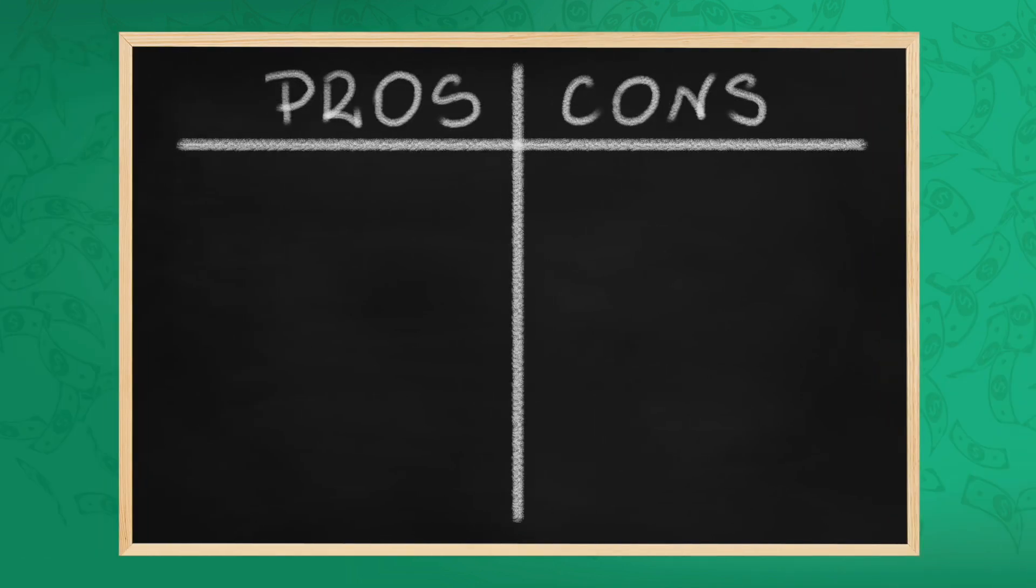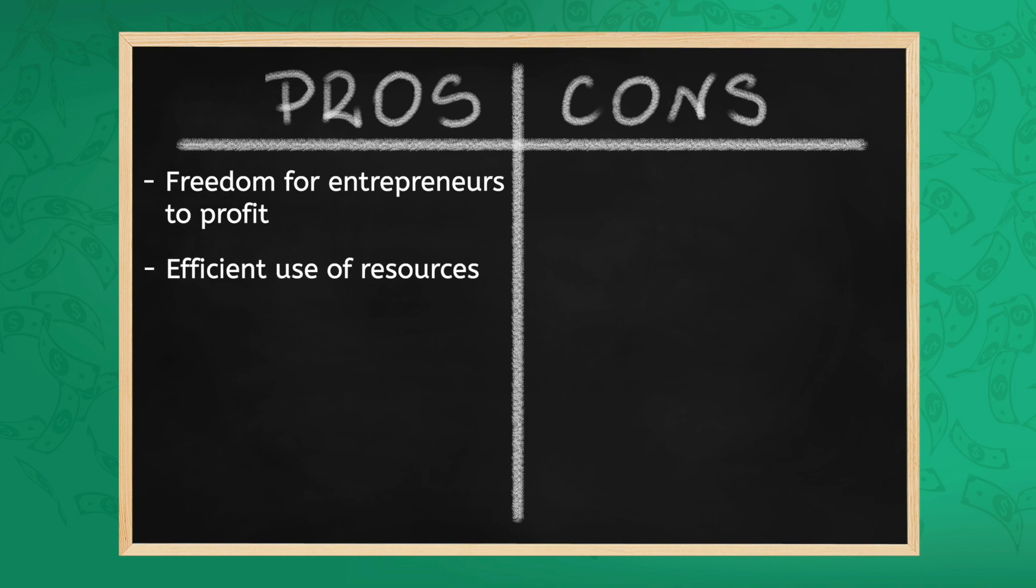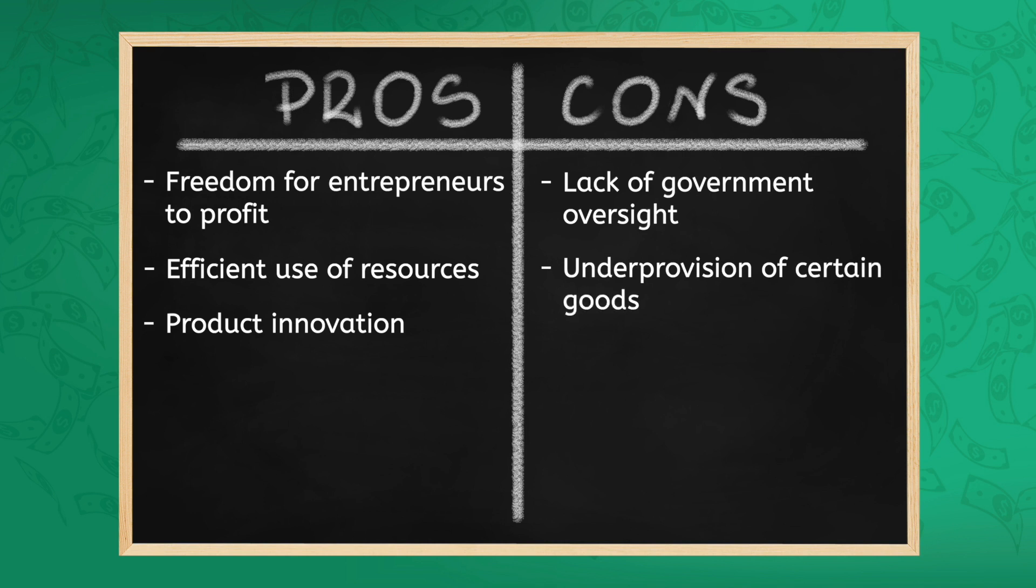Some of the pros of market economies include the freedom for entrepreneurs to profit, efficient use of resources, and product innovation. But some cons include a lack of government oversight, under-provision of certain goods, and business failure to adapt to changing market conditions.